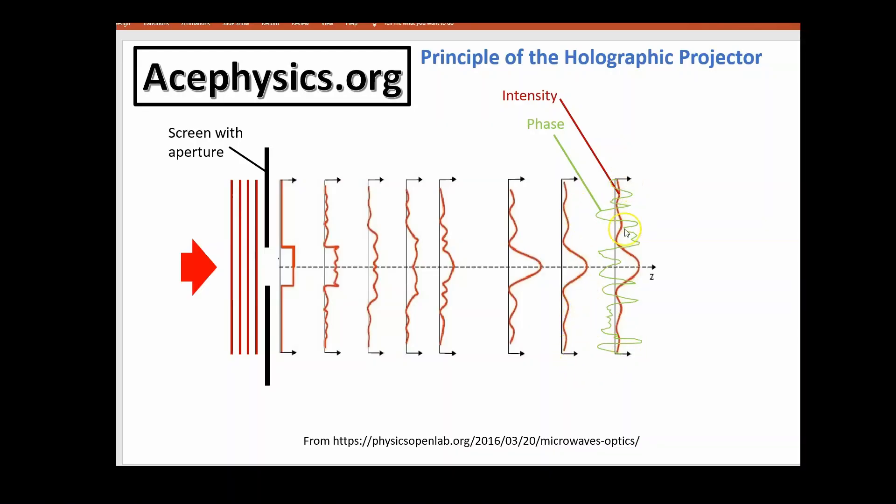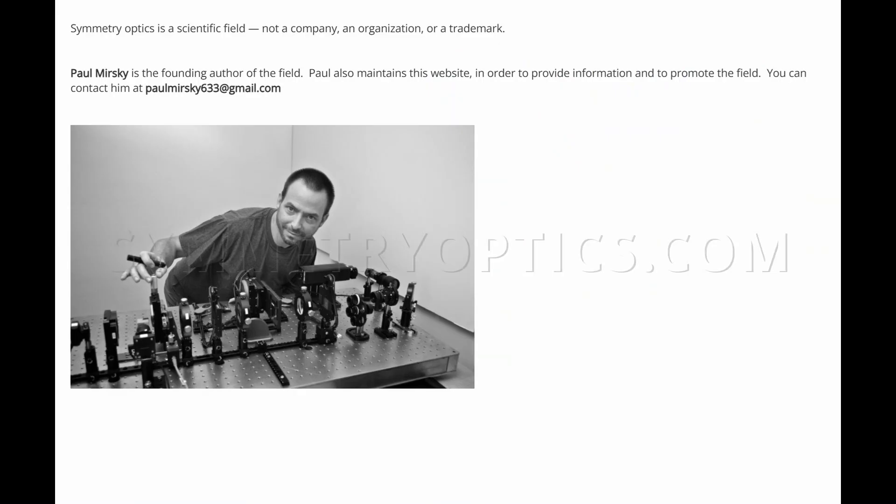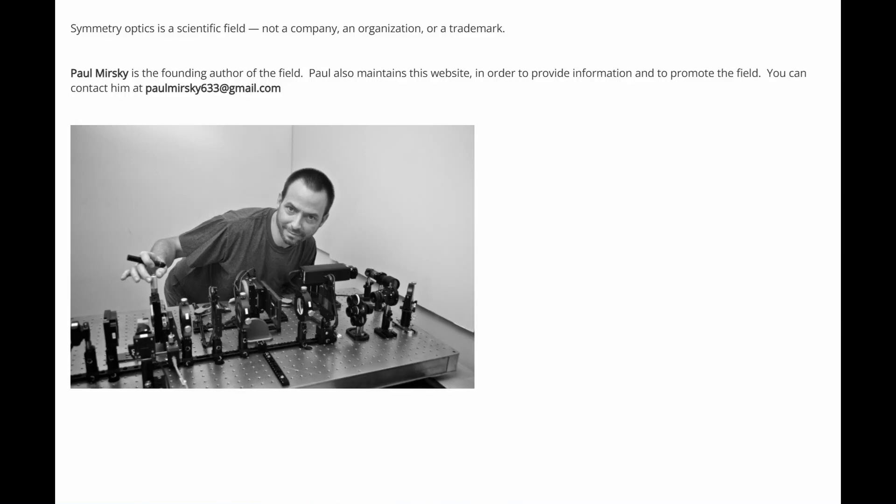And now, this intensity and phase profile in the far field is actually the Fourier transform of the profile at the aperture. And that is a basis for the field of Fourier optics, study of how light changes as it propagates. Visit symmetryoptics.com to explore diffraction, light propagation, and research videos by Paul Mierski.